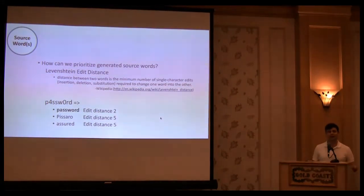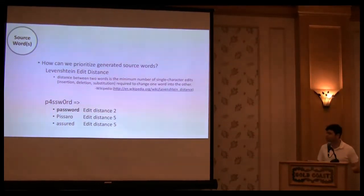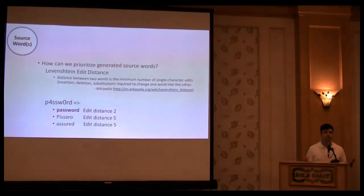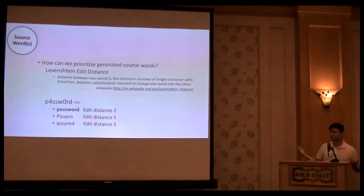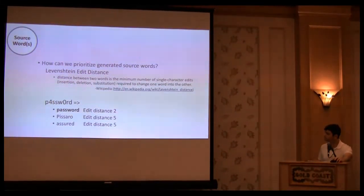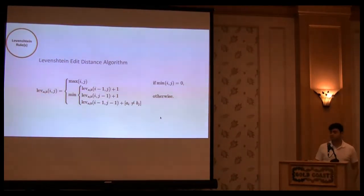We generate a whole bunch of words. How are we going to judge which one is a good one, which one is a bad one? A really amazing algorithm is Levenshtein Edit Distance. You can read more about that on Wikipedia. But it basically tells you the optimal edit operation amount they need to perform to transform one word into another. In the case of the password, you can see that the source word password, so p4sword, the source word password has edit distance of two, which should make sense because it does two substitutions. And the lower two candidates will be thrown out, Pissarro, assured, because their edit distance is too high.